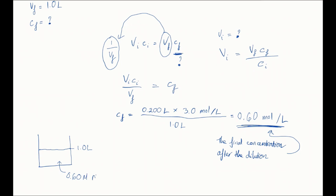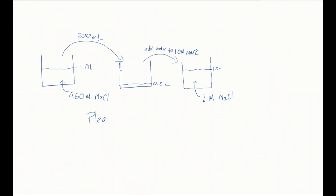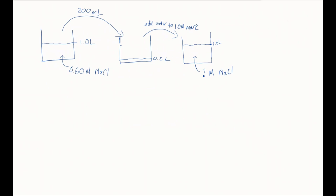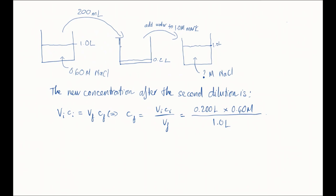Now if you take 200 milliliters out of this one liter of diluted solution, put in a new beaker, then make it up to one liter again, what will be the new concentration? So I would like you to calculate this. But the answer is that the final concentration will be 0.12 moles per liter.